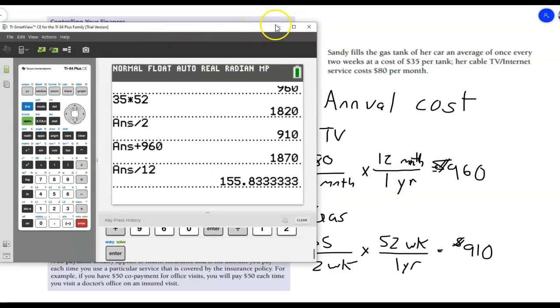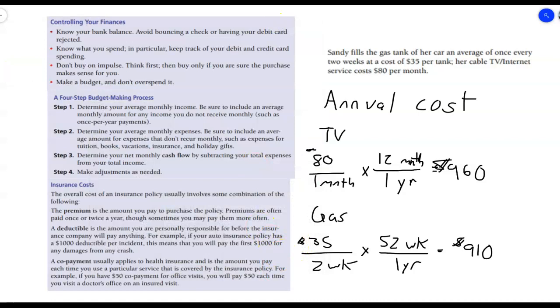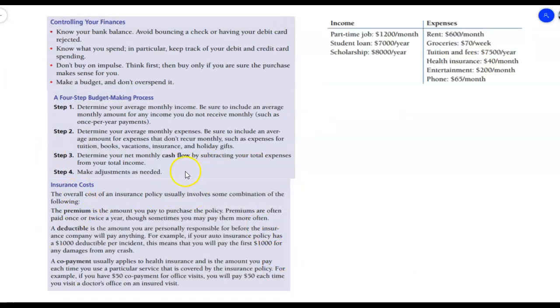All right, let's take a look at another example here. So for this one, I want to calculate my monthly net cash flow. So I first want to figure out my average monthly income. And then I want to figure out my average monthly expenses. And then I want to determine my cash flow by subtracting my expenses from my income. So with a positive number, that means that I'm making more than I'm spending. And if it's a negative, that means I'm spending more than I'm making.